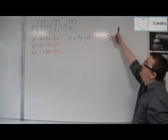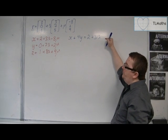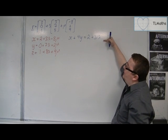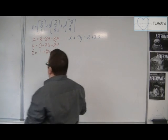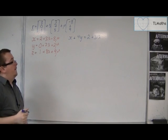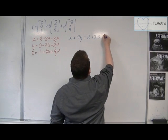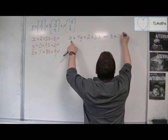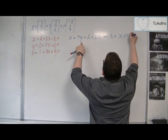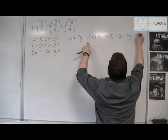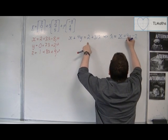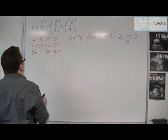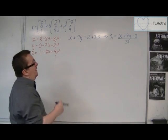That gives me this equation, which I can rearrange to get lambda. So I can rewrite this as λ equals x plus 4y minus 2, all divided by 31. So now we've got lambda expressed purely in terms of x and y.